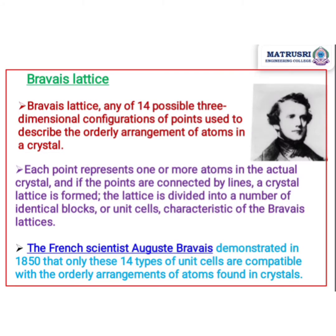A Bravais lattice is any of the 14 possible three-dimensional configurations of points used to describe the orderly arrangement of atoms in a crystal. Each point represents one or more atoms in the actual crystal, and if the points are connected by lines the crystal lattice is formed. The French scientist Auguste Bravais demonstrated these 14 lattice types in the year 1850, showing that only these configurations are compatible with the orderly arrangement of atoms found in crystals.